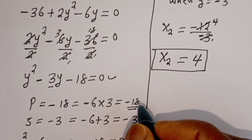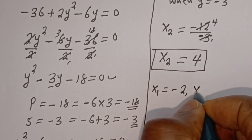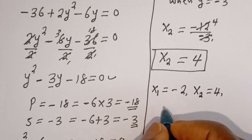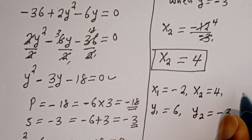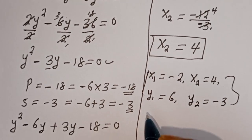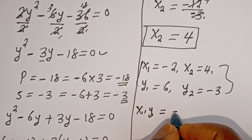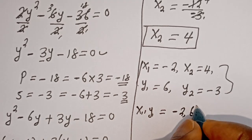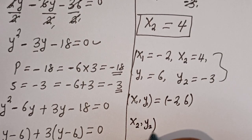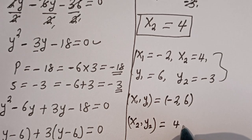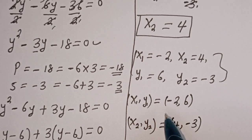Our final answers are: x1 is equal to minus 2, x2 is equal to 4, y1 is equal to 6, and y2 is equal to minus 3. Therefore, the solution pairs are: x1, y1 equals minus 2, 6; and x2, y2 equals 4, minus 3. Thank you for watching. Please don't forget to like, share, comment and subscribe to my channel. Bye bye.